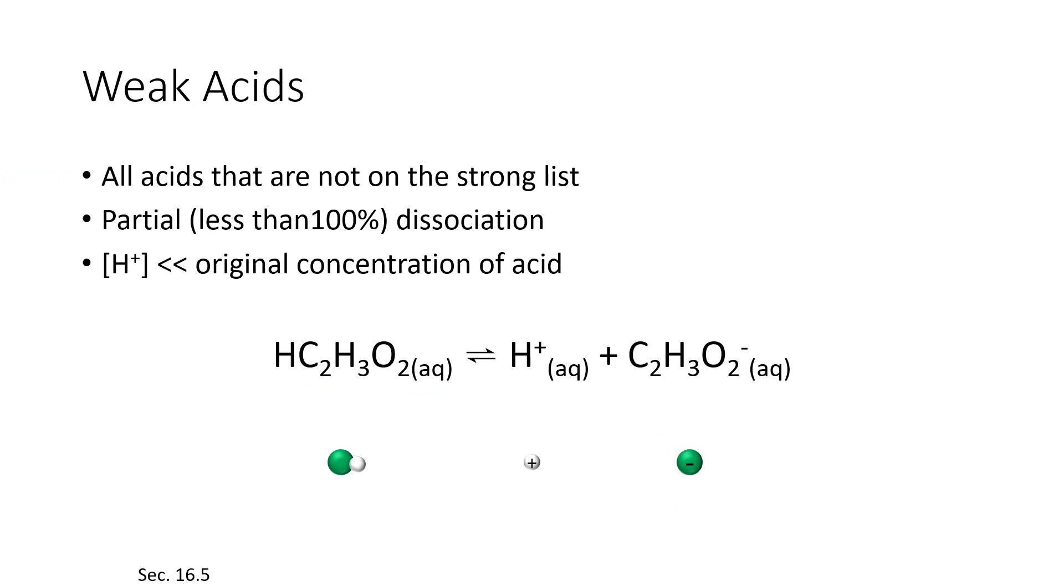Weak acids, on the other hand, are going to be any acid that's not on that strong list. And when you look at a solution of a weak acid, such as this one here, which is acetic acid, somewhere around 97 to 99% of the molecules will be stuck together. And only about 1 to 3% of the molecules will have broken apart to give us these ions. So the amount of H plus ion that's available in solution to do the reactions that are typical of acids is very, very small.